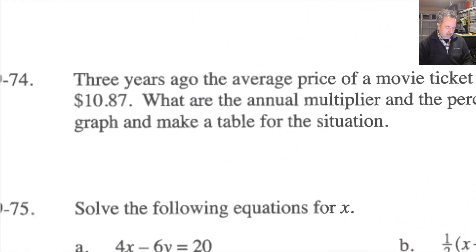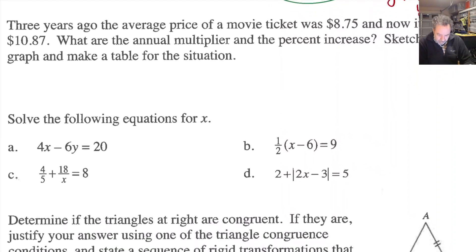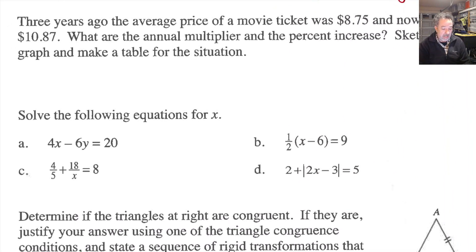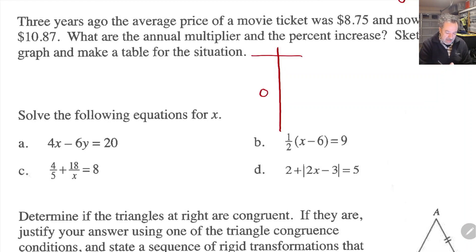Question 74: three years ago the average price of a movie ticket was $8.75, and now the price is $10.87. What are the annual multiplier and the percent increase? I'll organize my thinking with a table: now it's $10.87, one year ago, two years ago, three years ago it was $8.75.